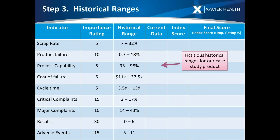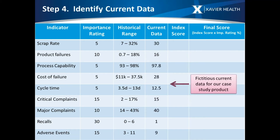Step three is to look at the historical ranges — just a matter of looking at what the data has been over time for each indicator. We plugged in some fictitious historical ranges for our product. Step four is the current data: what is the current data you have today for each of those indicators? We plugged in some fictitious current data as well.